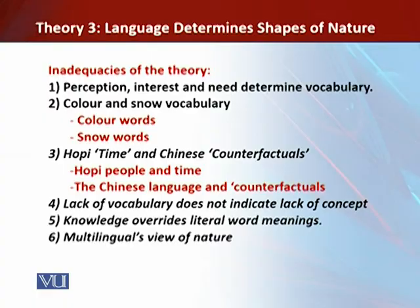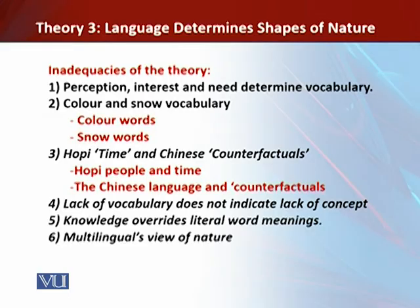The fifth point is that knowledge overrides literal word meanings. We can believe something quite different from what language literally specifies, and continual use of a language form may not change the underlying thought. For example, the word 'sunset' — we constantly hear and use this word, which might lead us to believe the sun sets on its own, although the truth is that the earth moves, not the sun.